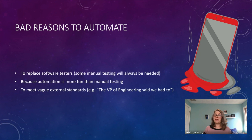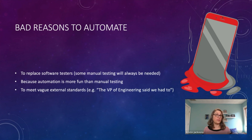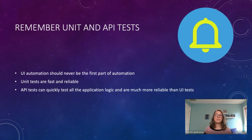Maybe the VP of Engineering is telling you they want automation, but you should find out why. What are they hoping to get out of the project? Do they think it will guarantee more quality, or that they'll need to hire fewer people? Also, before you even start a mobile automation project, remember: unit and API tests should come first — UI automation should never be the first part of automation.